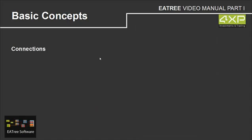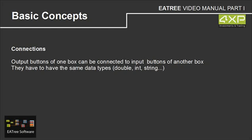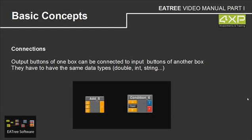Connections. We need to connect our boxes to each other. Output buttons of one box can be connected to input buttons of another box. They have to have the same data types, like double, int, or string. To connect two boxes we click on the output button of one box, drag the line to the input button, release the mouse button, and the connection is made.